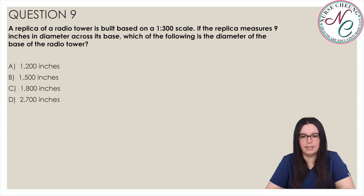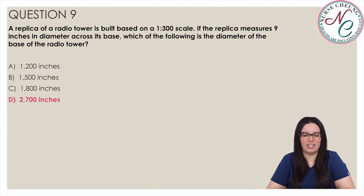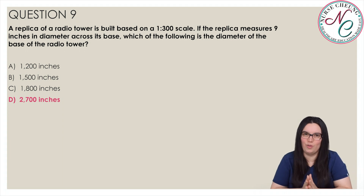Question 9. A replica of a radio tower is built based on a 1 to 300 scale. If the replica measures nine inches in diameter across its base, which of the following is the diameter of the base of the radio tower? Is it A, 1,200 inches; B, 1,500 inches; C, 1,800 inches; or D, 2,700 inches? The correct answer is D, 2,700 inches. We set up the proportion: 1 over 300 equals 9 over D. Cross multiplying gives 1D equal to 9 times 300, which is 2,700 inches.